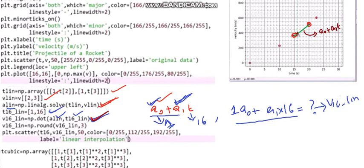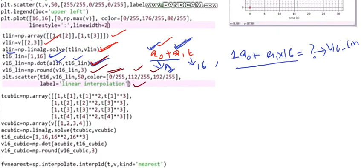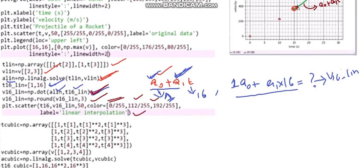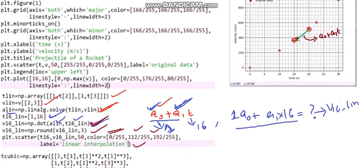After that, we round the result to a maximum of 3 decimal places. Then we plot that extra point at t=16 as a scatter plot with a dot size of 50. The color is set so that red is 0 and the other two color channels are present, giving a different color. This is the basic idea behind linear interpolation.